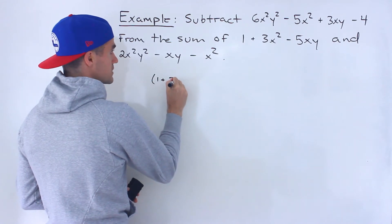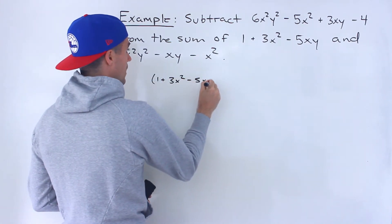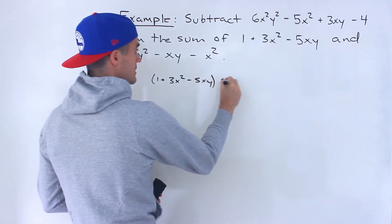Let's put this in brackets. So we'll have (1 + 3x² - 5xy). So we're taking this, adding it to this.